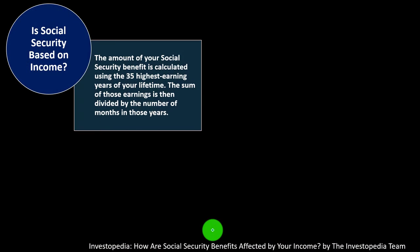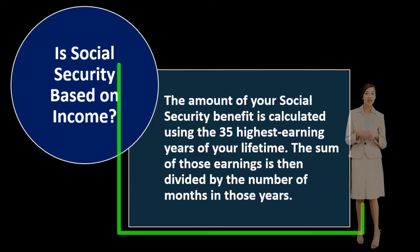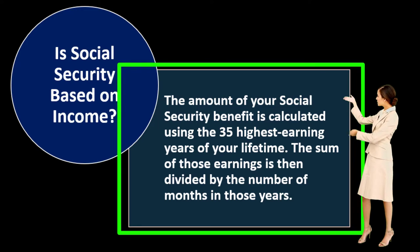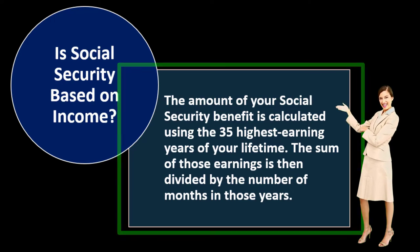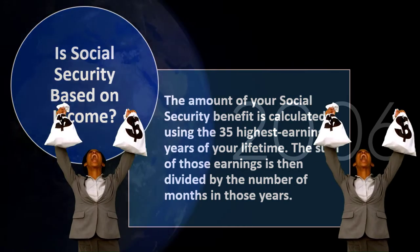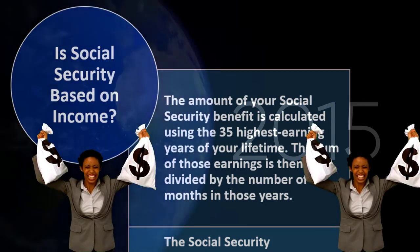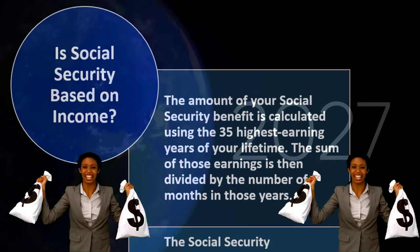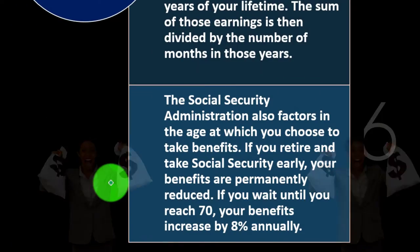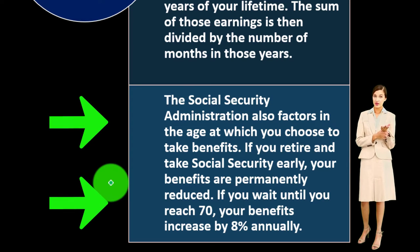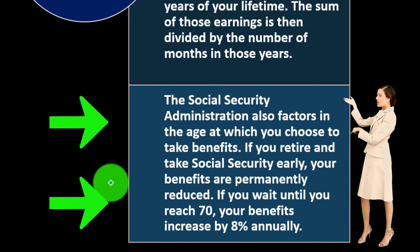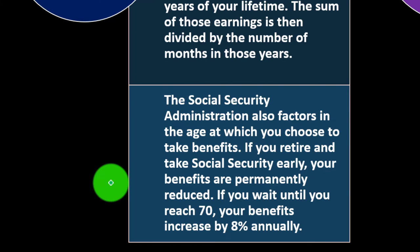The amount of your Social Security benefit is calculated using the 35 highest earning years of your lifetime. The sum of those earnings is divided by the number of months in those years to get an average. The higher your income in those 35 years, the greater the positive benefit increase in your Social Security payments. The SSA also factors in the age at which you choose to take benefits — retiring early permanently reduces your benefits.